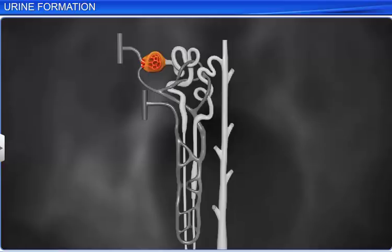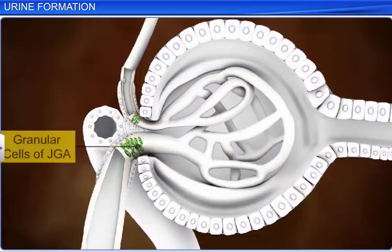The blood pressure in the capillaries acts as a major force in glomerular filtration. Besides, there are certain intrinsic mechanisms in the kidneys that auto-regulate the GFR. The juxtaglomerular apparatus or JGA is one such microscopic structure that regulates the GFR.